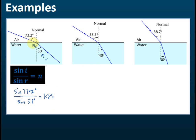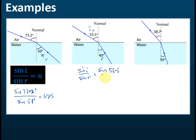For the second example, we have the same medium — air to water — but the angles change. The angle of incidence is reduced to 53.5 degrees and the angle of refraction becomes 40 degrees. Using sine i over sine r: sine 53.5 divided by sine 40 degrees. Using a calculator, you get the same answer: 1.25.